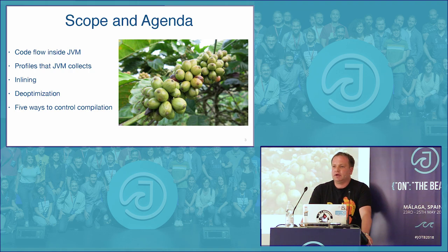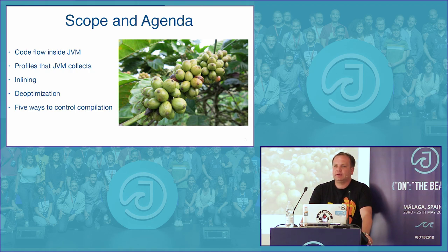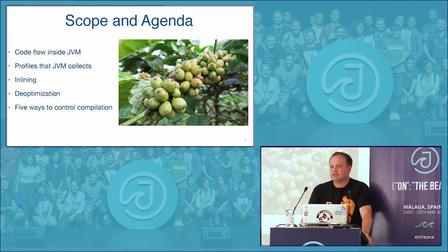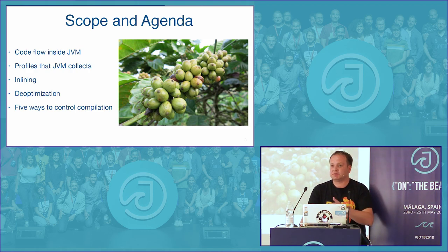Then we'll talk about what code profiles are, why they're collected, and what they consist of. We'll talk about two top-level components of compilation: inlining and deoptimization. I'll specifically cover what the optimizations are, why they happen, and how to prevent them. The first four items are fairly generic. The final section will cover VM APIs about how to control just-in-time compilation — that's where things get more vendor-specific.